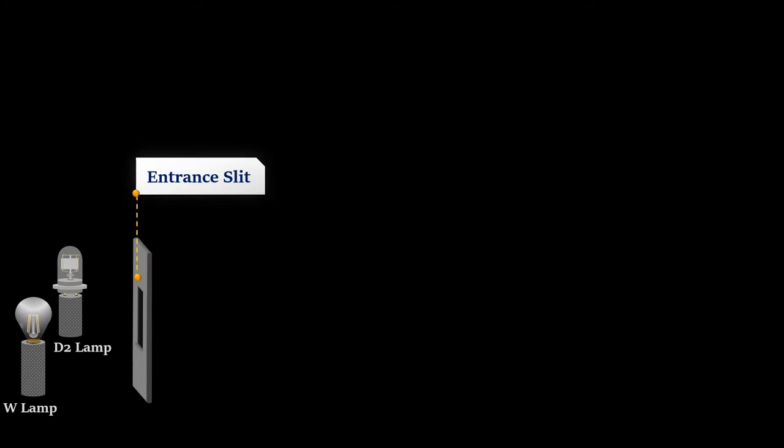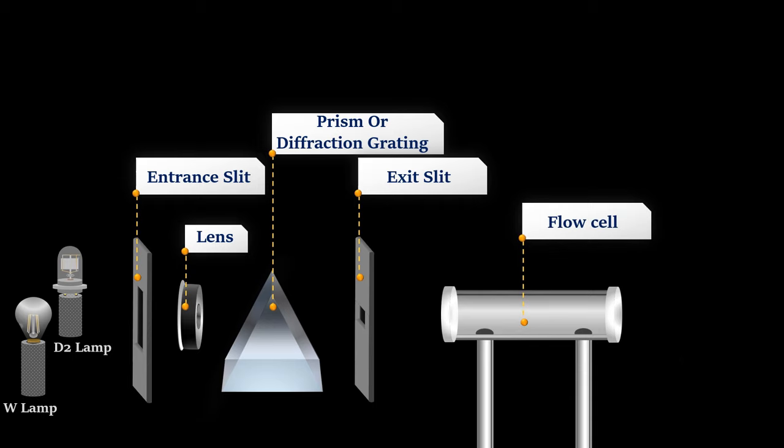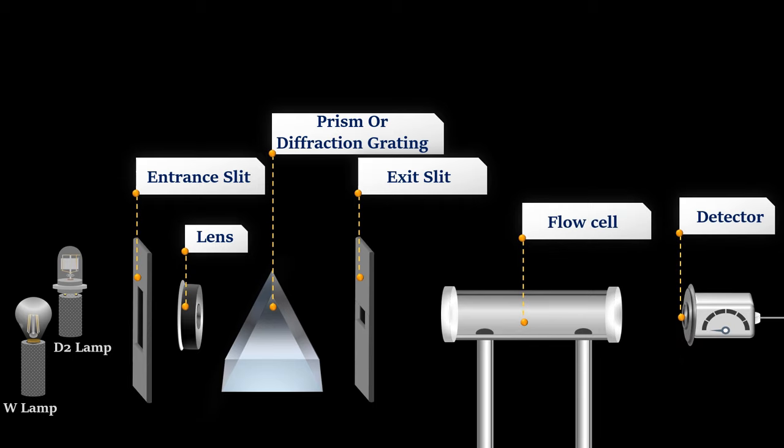In the UV-VIS detector we can also find entrance slit, lens, prism or diffraction grating, exit slit, flow cell, and detector for absorption measurements.